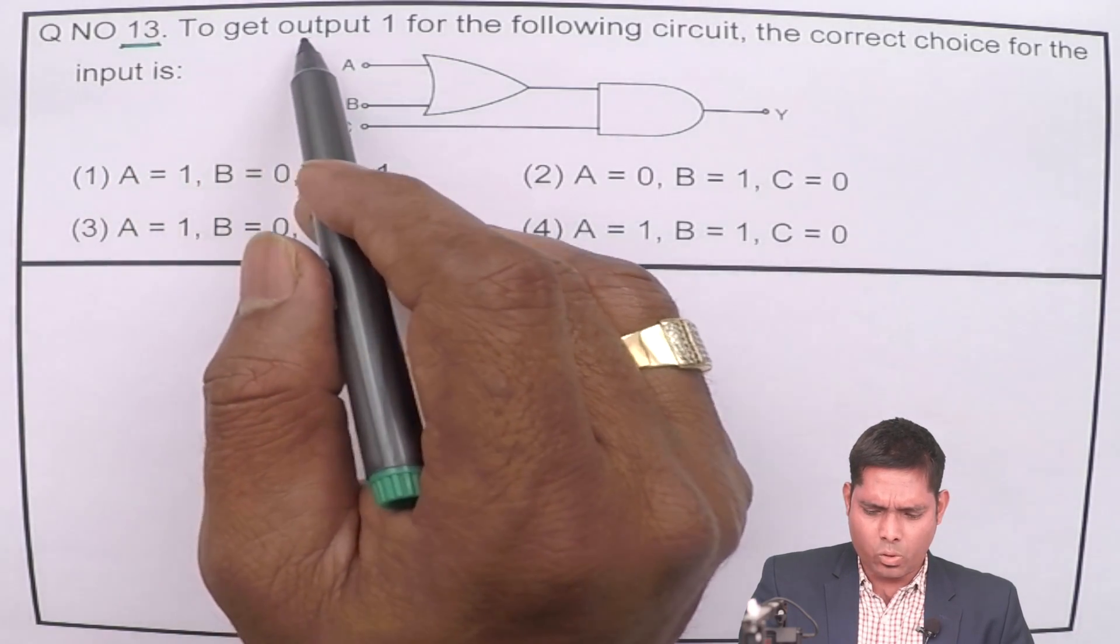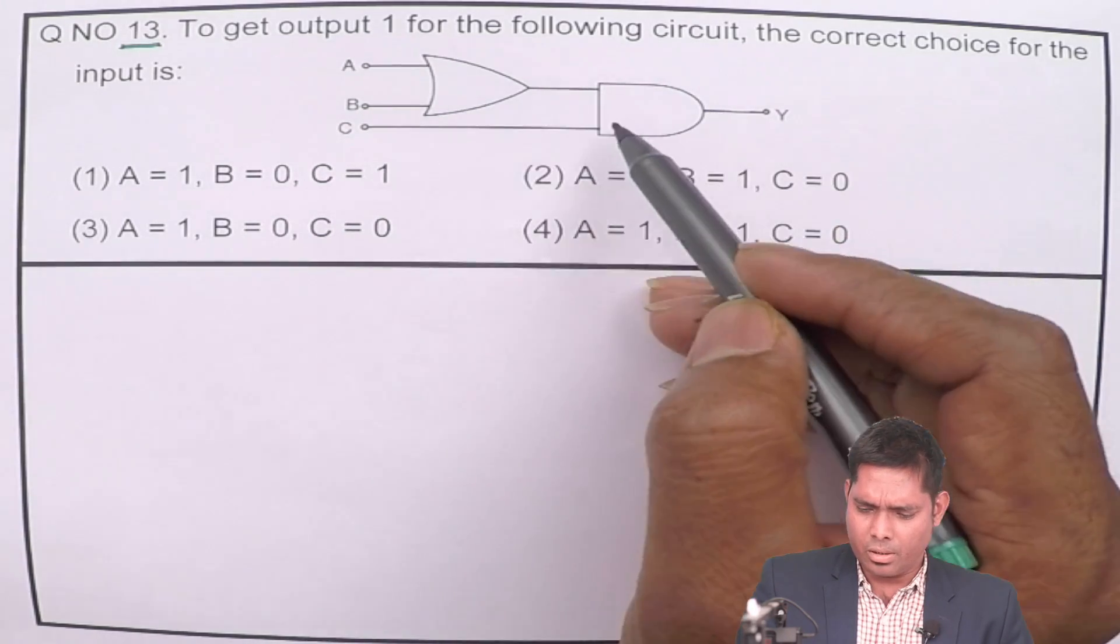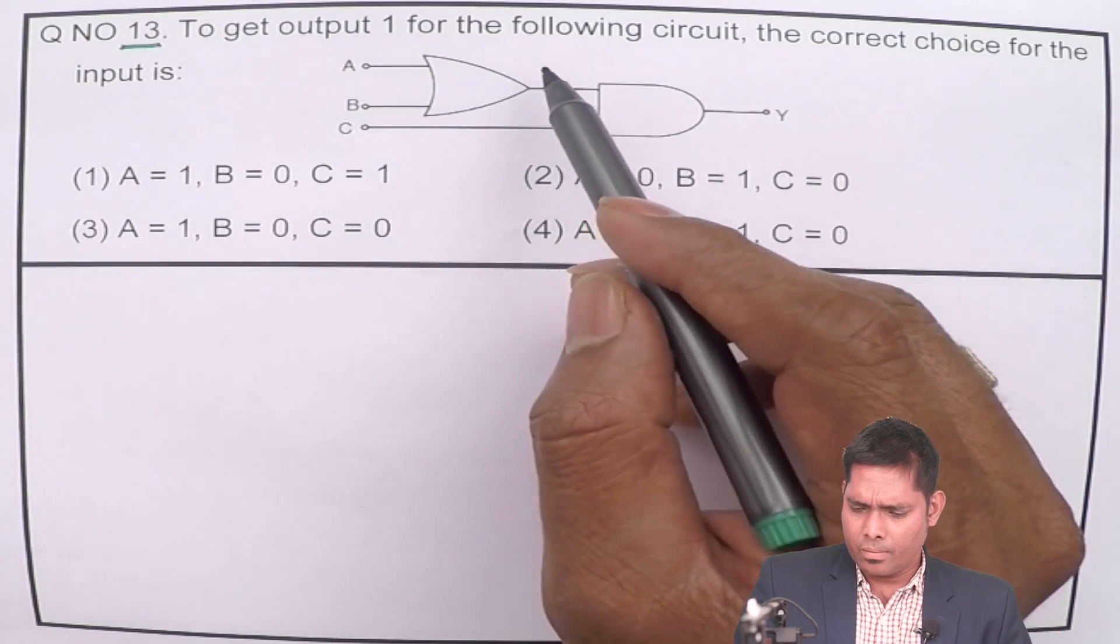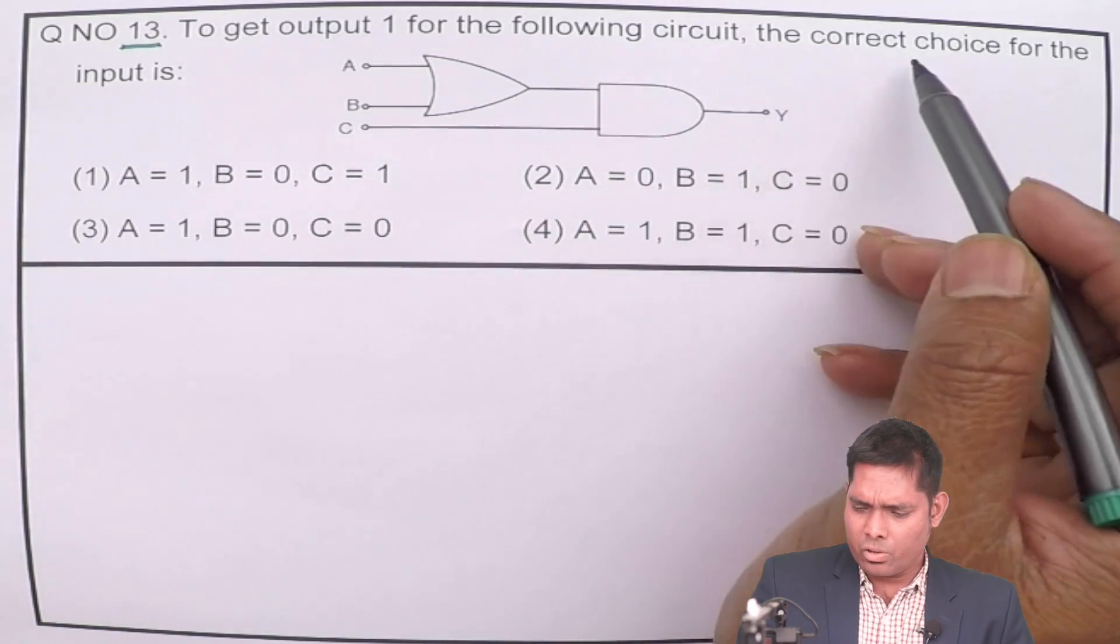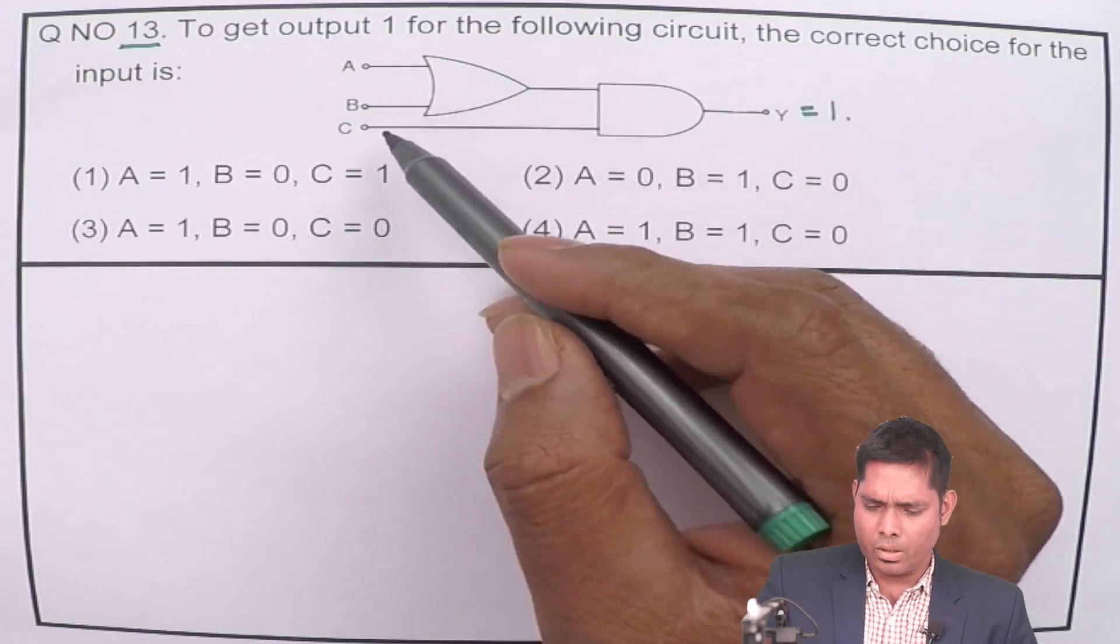To get output 1, we have to get output 1. So this is the circuit given. The correct choice for the input is—so I want 1 here, so what should be the input?